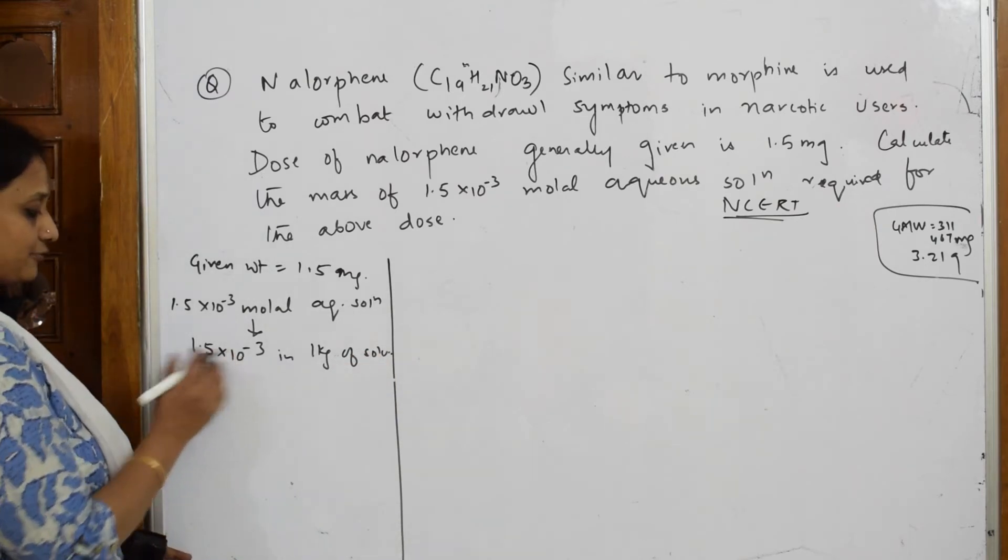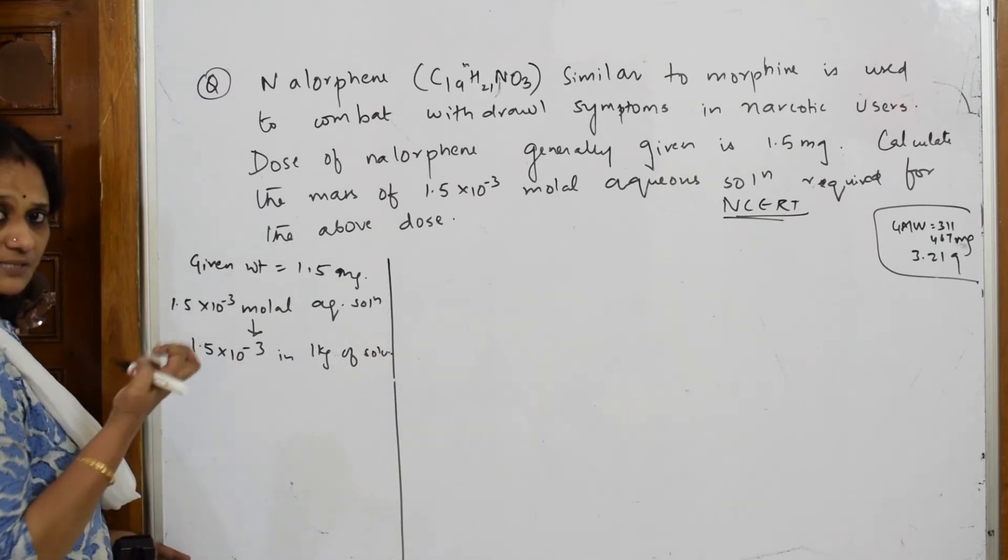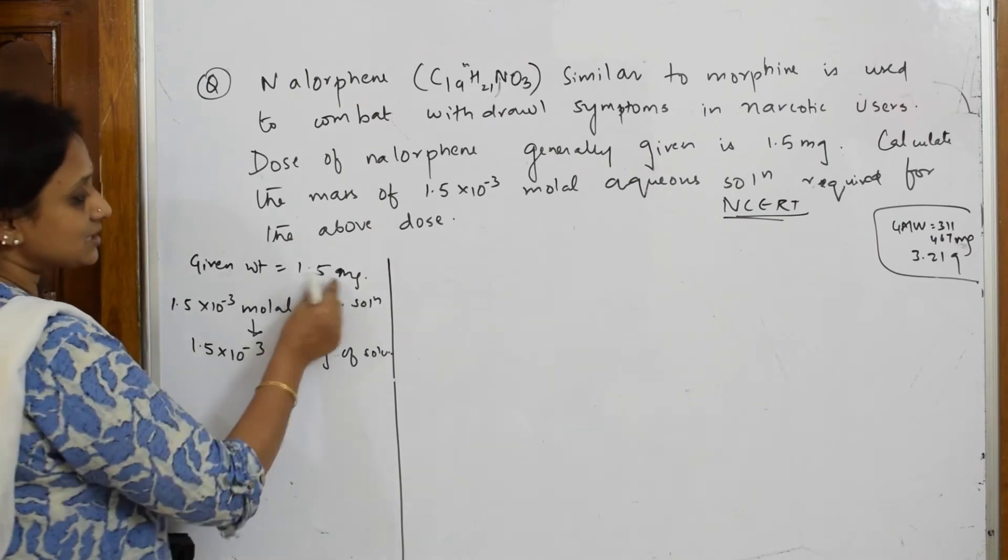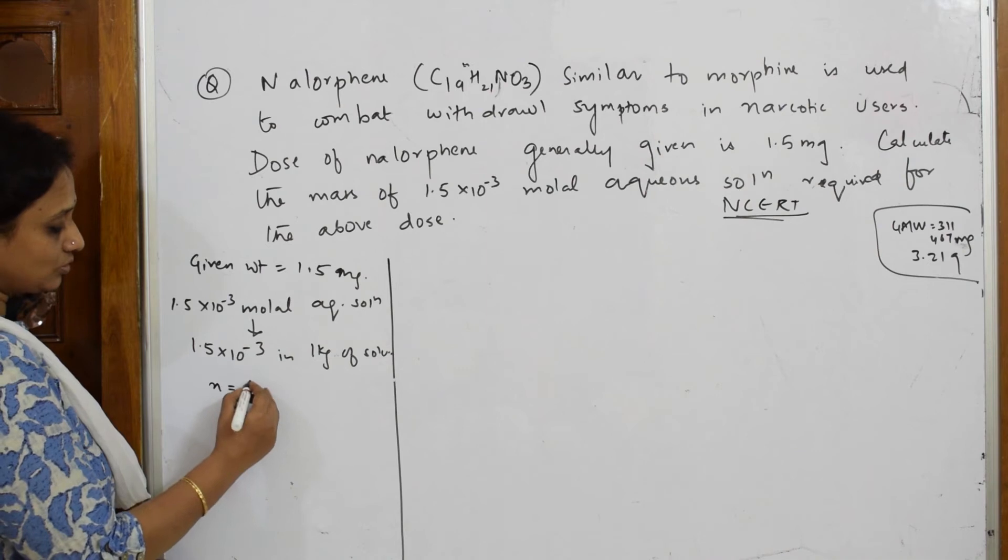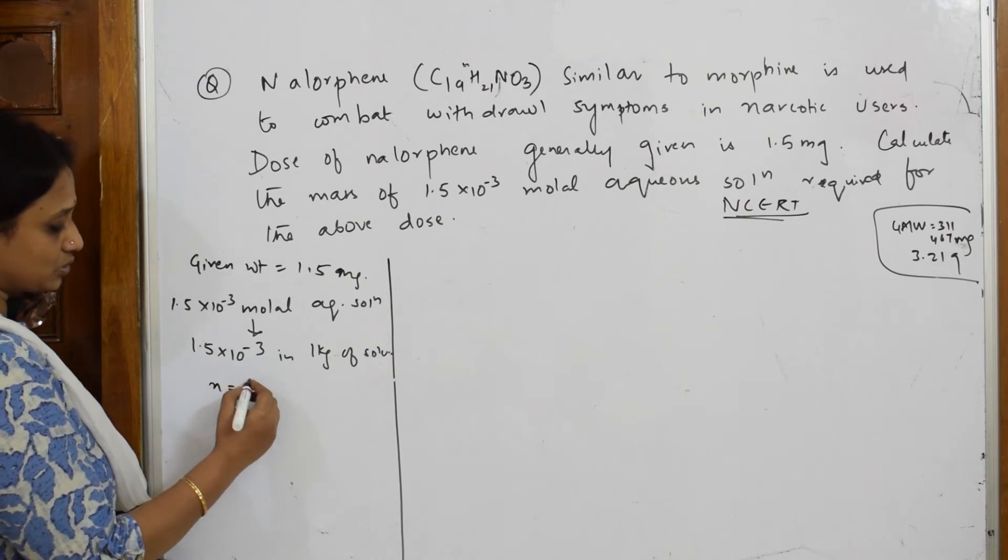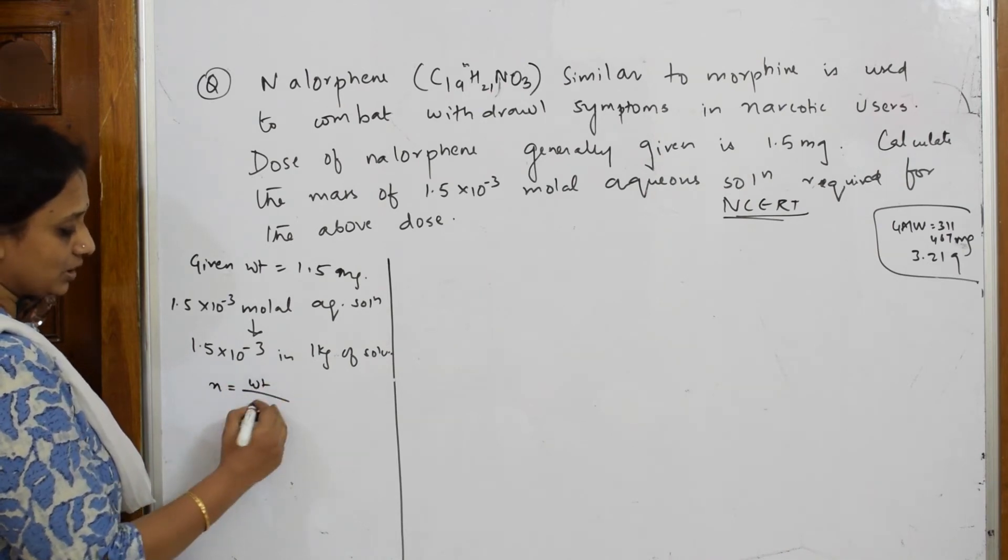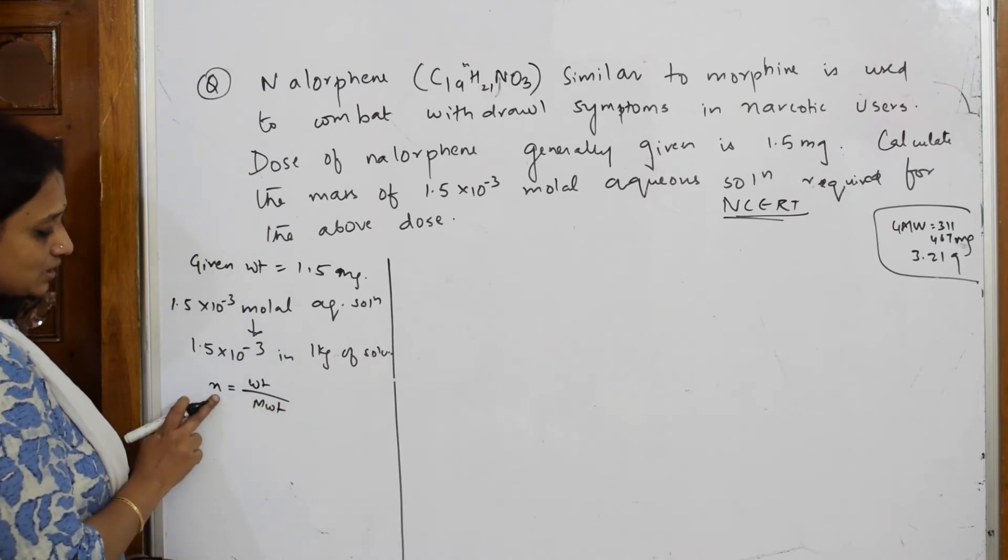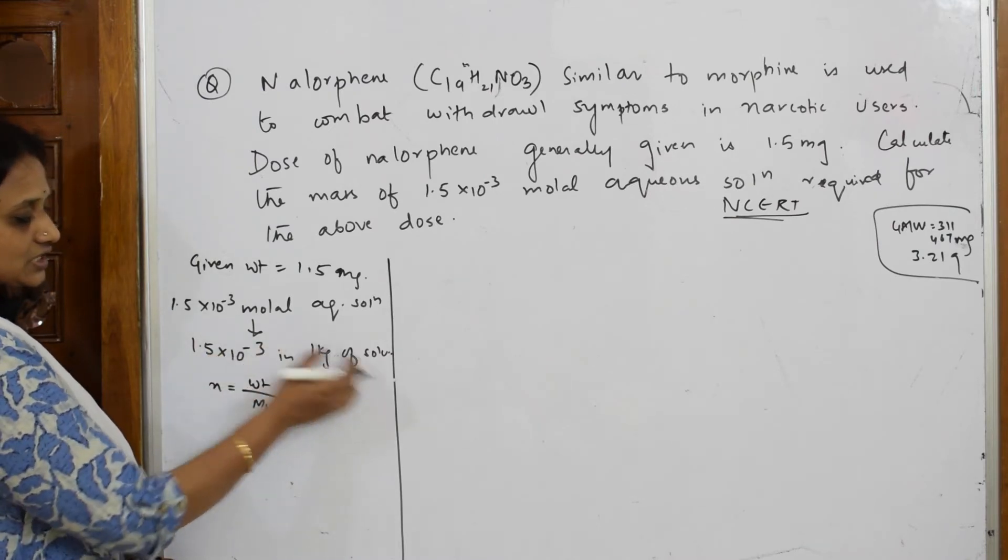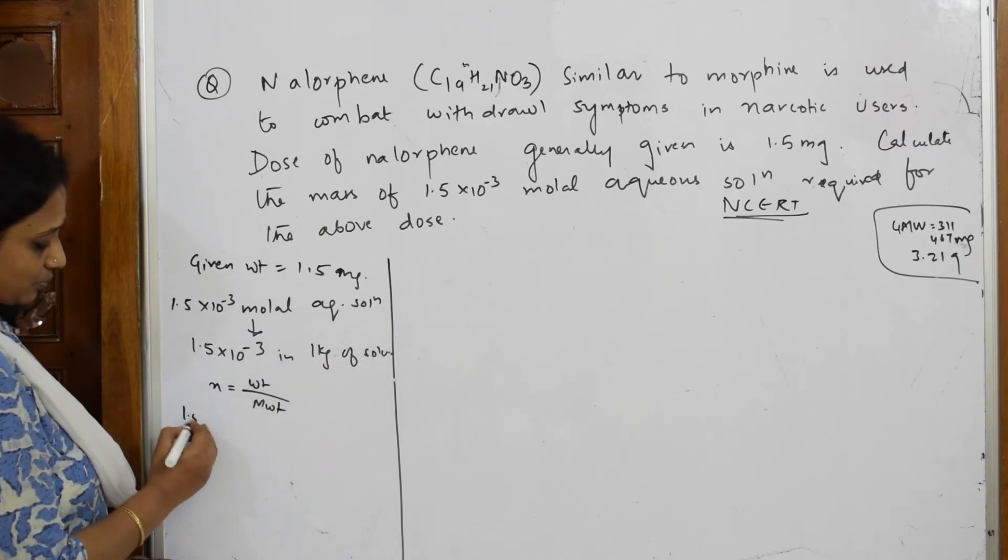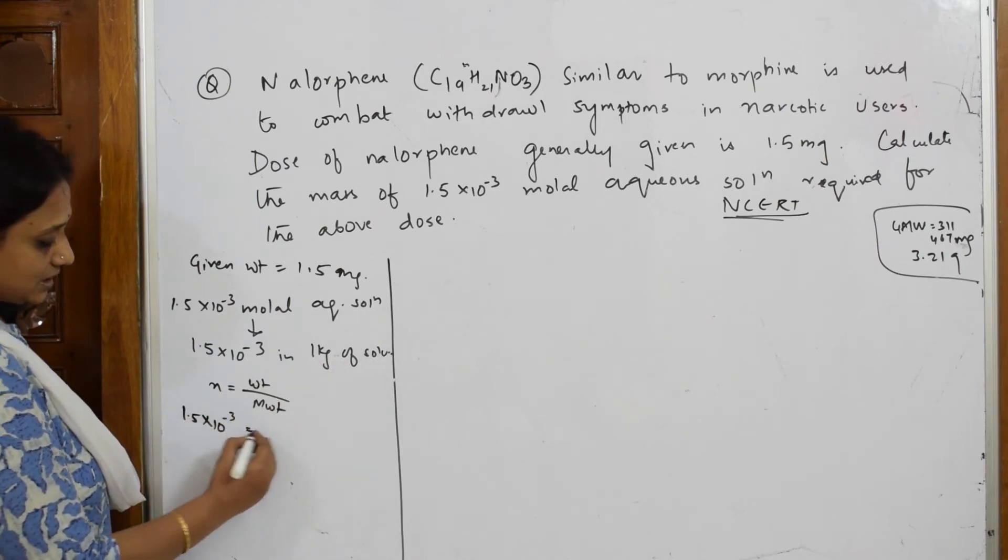Now I have to find that particular mass because this mass and this mass I'm going to relate. n equals the number of moles equals weight by molecular weight. So this amount of moles is dissolved in 1 kg.